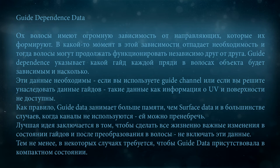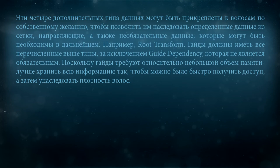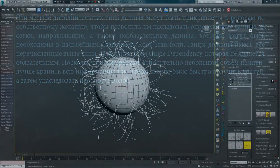The best practice is to make all vital changes in the guide state, and after converting, not to include this data in the hair. However, in some cases Guide Data is required to be present in a compact state. These four additional data types can be attached to the hair at will, to allow them to inherit certain data from the mesh and guides, as well as optional data that may be needed later, for example Root Transform. Guides should have all the listed types with the exception of Guide Dependency, which is not mandatory. Since guides require relatively little memory, it is better to store all information so it can be quickly accessed, and then inherit strand density.